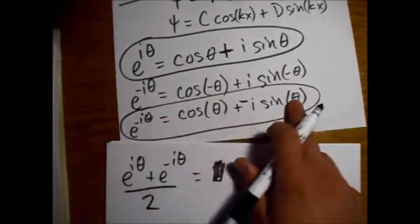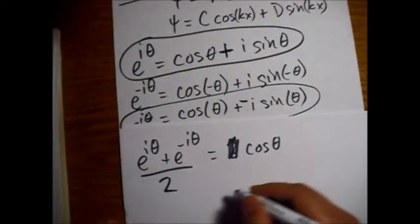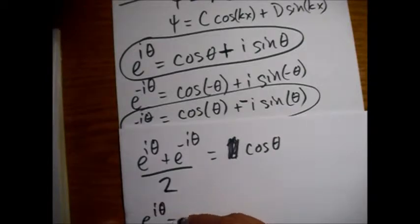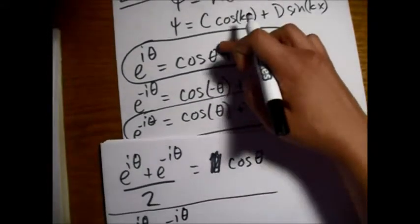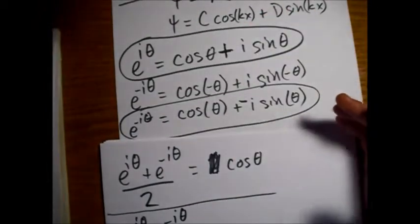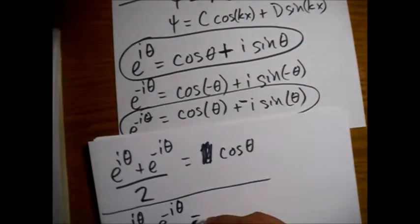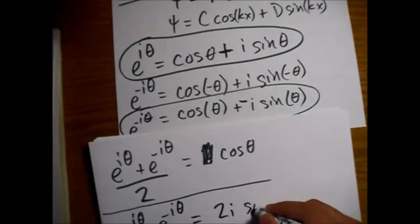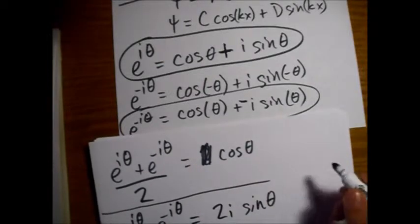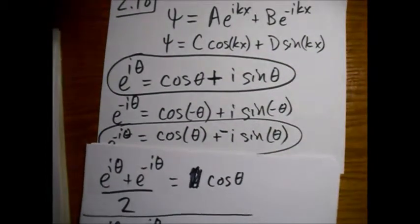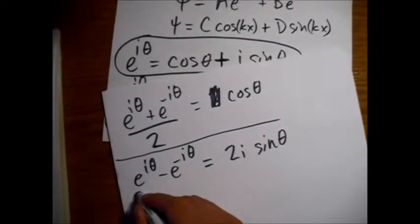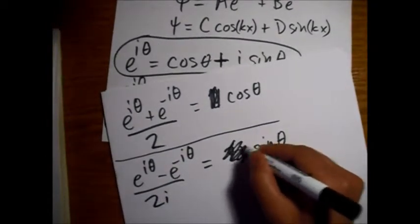If we want to do it the other way, and we subtract this equation from this one, e to the iθ minus e to the minus iθ. I'm going to put a line here to keep them separate. Then this cosine, we subtract this from this, we will get zero. But we'll get a two i sine of theta on this side. So now, if we just divide by two i, then we have sine in terms of these things as well.